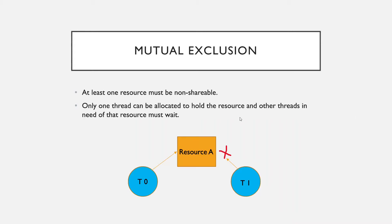Only one thread can be allocated to hold the resource, and the other thread in need of the resource must wait. So here T0 is allocated Resource A, meaning T1 must wait for T0 to release Resource A.